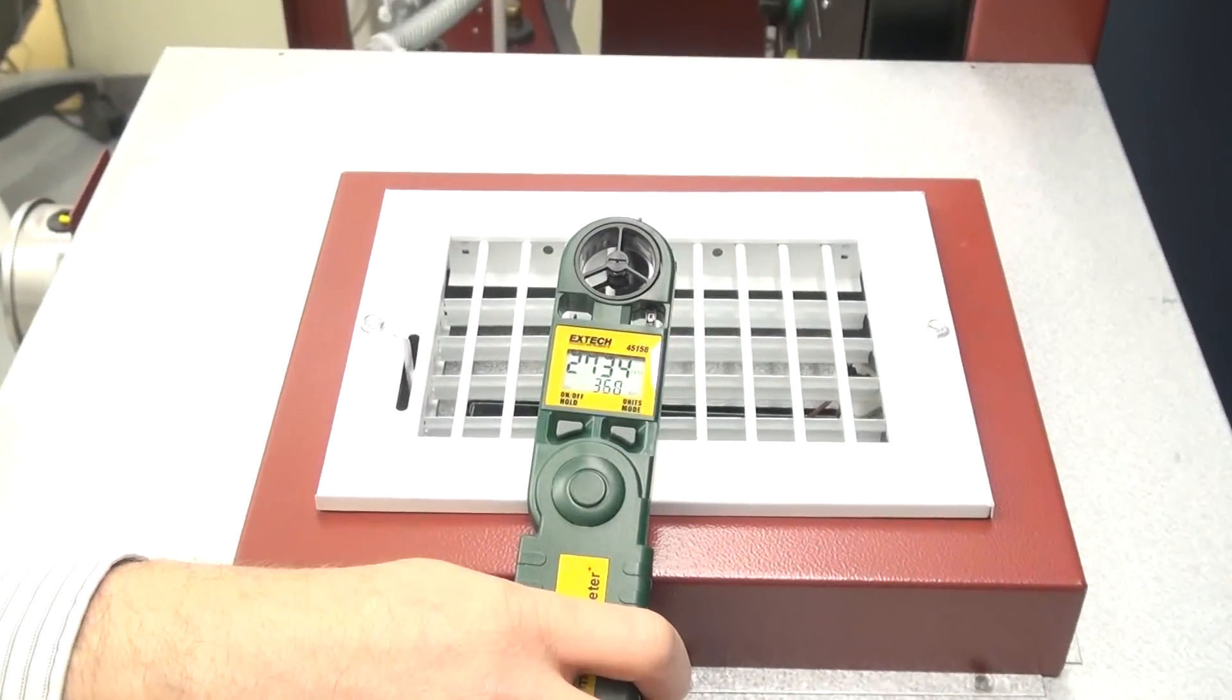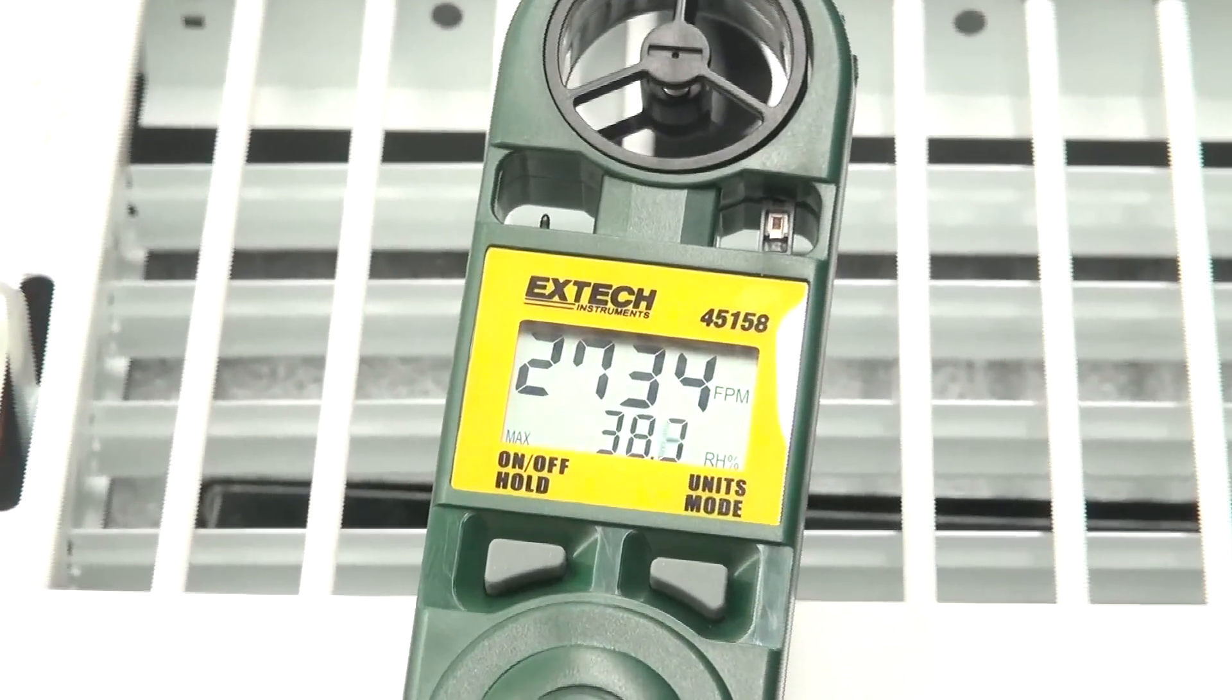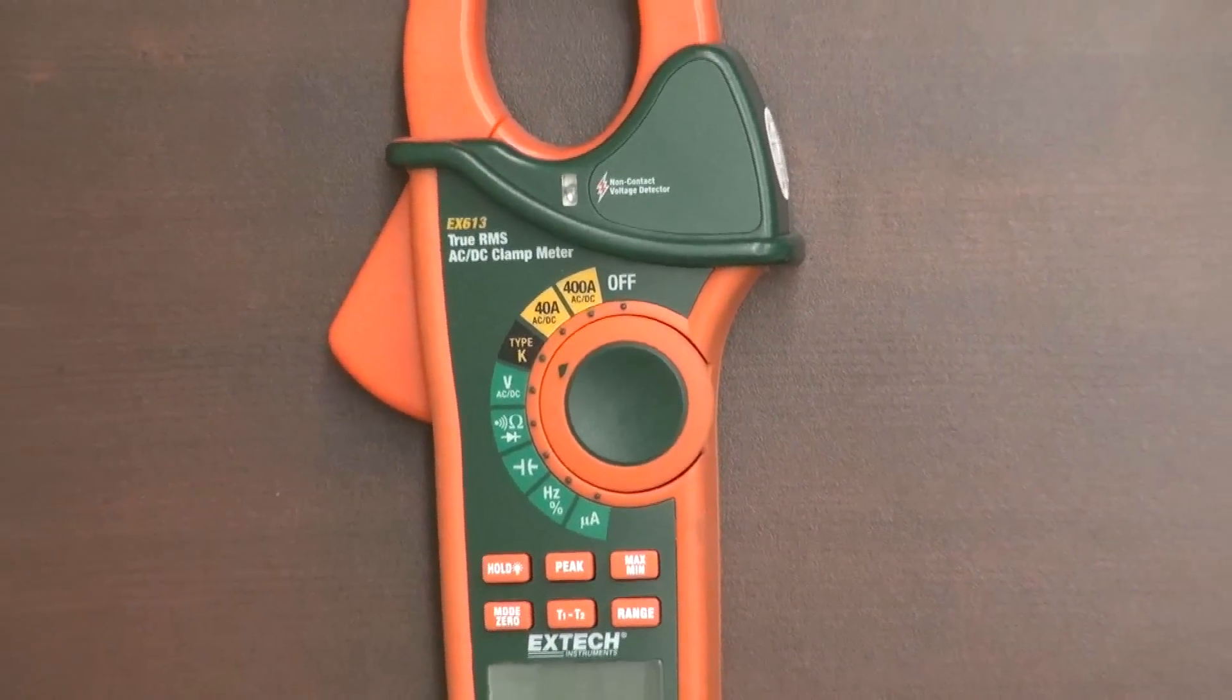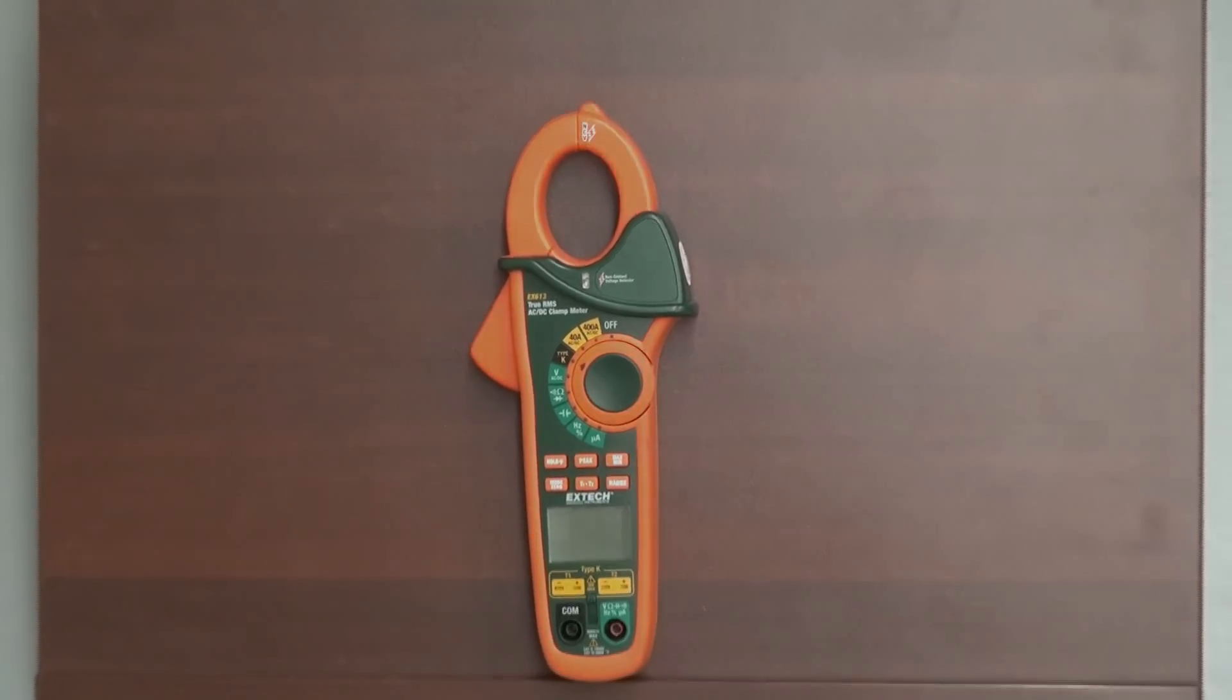It also includes a waterproof pocket size anemometer with air velocity, temperature, relative humidity, dew point and windchill, and an AC/DC clamp meter with built-in dual thermocouple inputs and non-contact voltage detector.